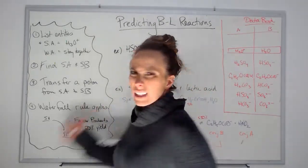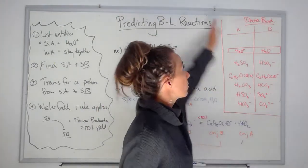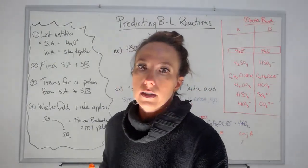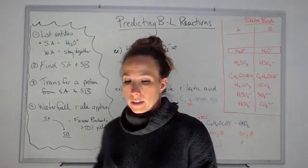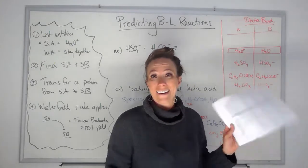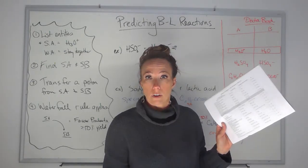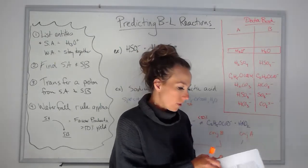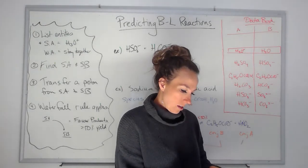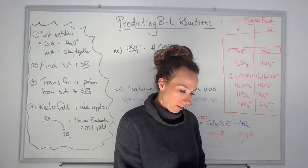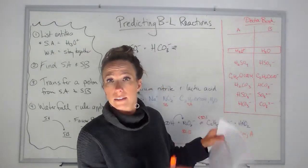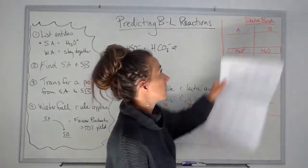Let's have a look at our data booklet. I copied out a little section of it that relates to this board right now — it's on pages 8 and 9 of your data booklets. You have this double-sided chart, and it says 'Relative Strengths of Acids and Bases' at the top.